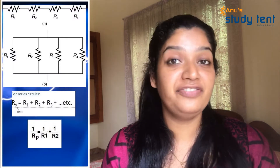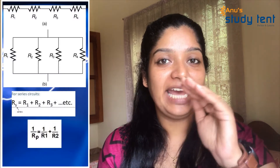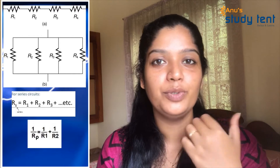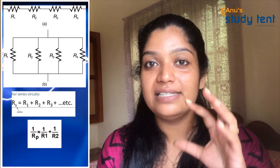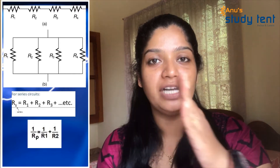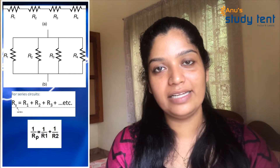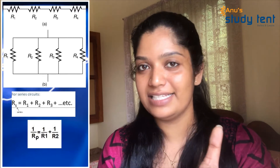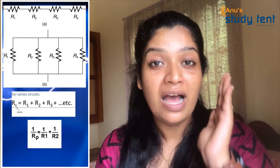Resistors can be connected differently in a circuit. First, we connect them end-to-end — this is called resistors in series. For R1, R2, and R3 connected in series, the effective resistance is R is equal to R1 plus R2 plus R3.